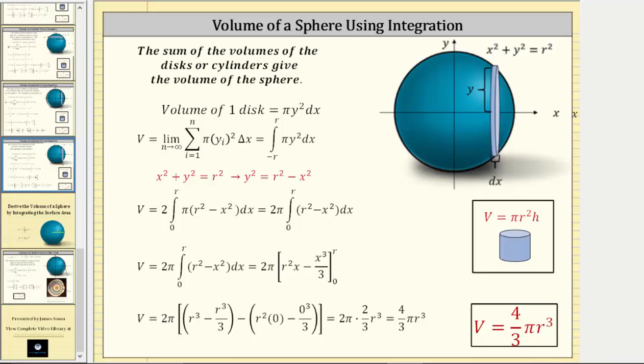To begin, one way to create a sphere would be to graph the circle x squared plus y squared equals r squared on the xy coordinate plane, and then rotate the circle about the x-axis. After the rotation, we have a sphere with radius r.